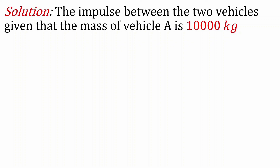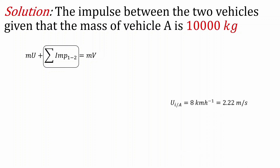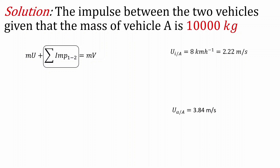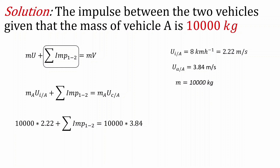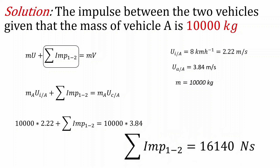Next we calculate the impulse between the two vehicles, given that the mass of vehicle A is 10,000 kilograms. The only suitable equation among the kinetic relations is the impulse and momentum equation. We have the velocity of vehicle A before collision, the velocity of vehicle A after collision, and the mass of vehicle A. Substituting into the equation — impulse plus momentum before collision equals momentum after collision — we evaluate and get the impulse as 16,140 N·s.